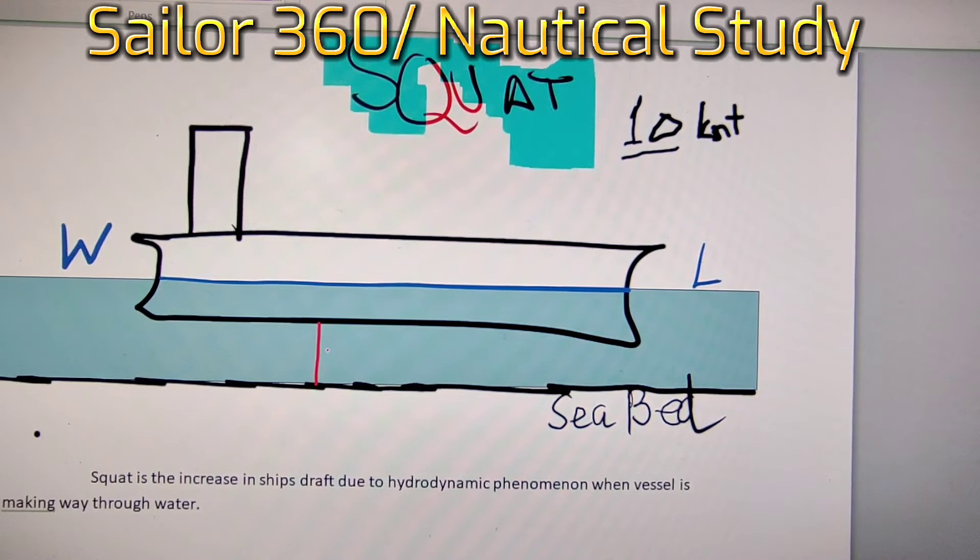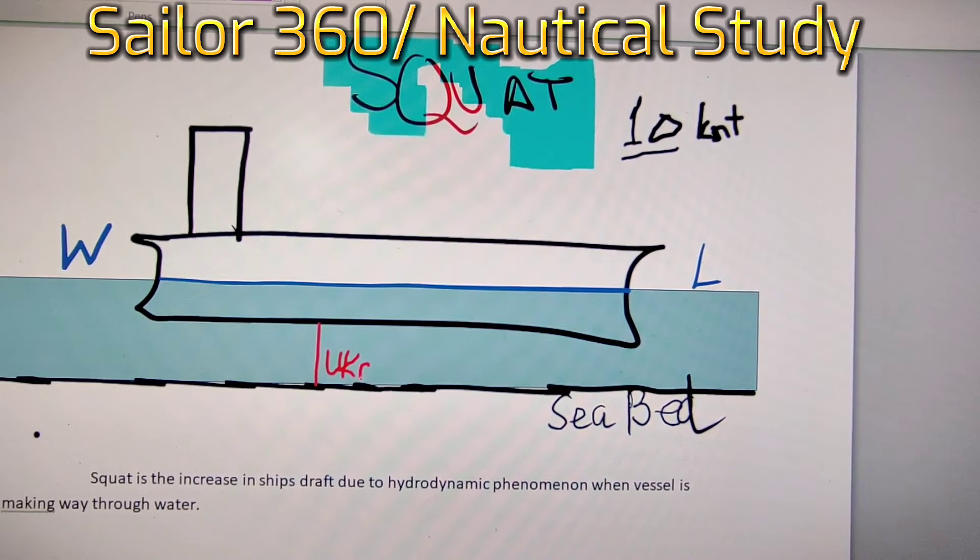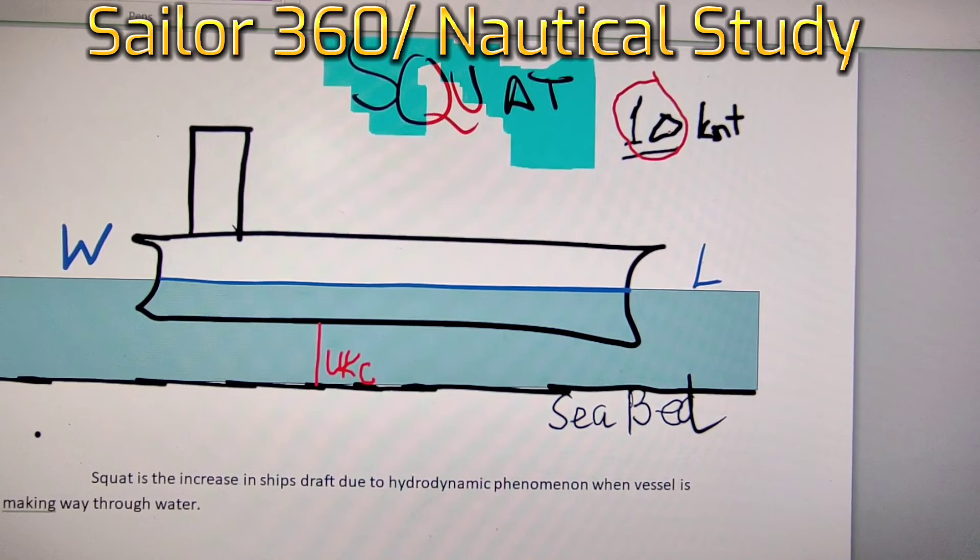So this is what you can see at zero knot speed. Now we will see if speed becomes 10 knots, the vessel will bodily sink a little bit more. Now let us show this in the figure.